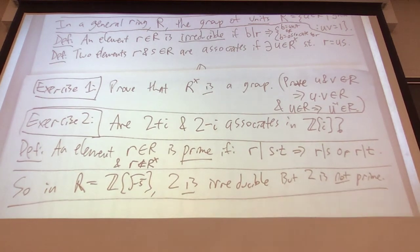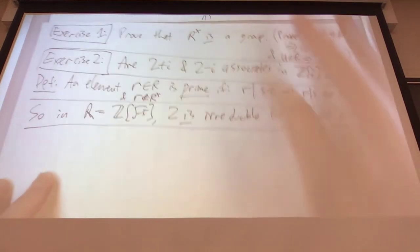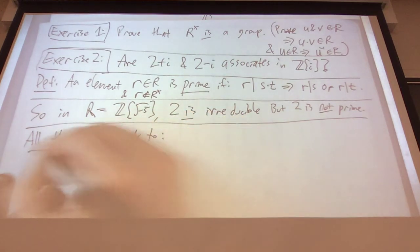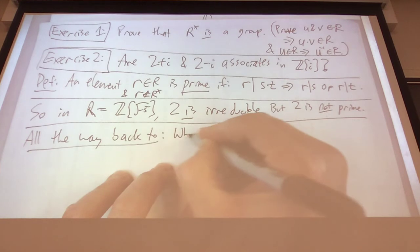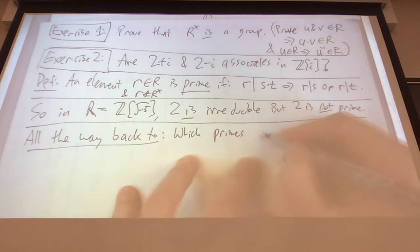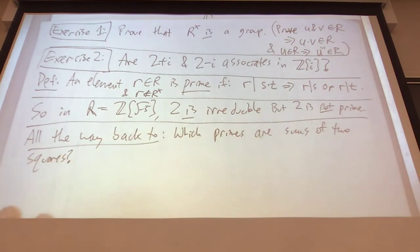With this discussion and with the Euclidean algorithm in the Gaussian integers, we have all the tools we need to answer the question: which primes can be expressed as a sum of two squares? We can go all the way back. What does this question have to do with all this nonsense we've been doing? These are all going to come together right now.